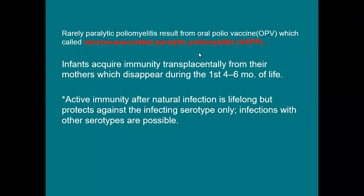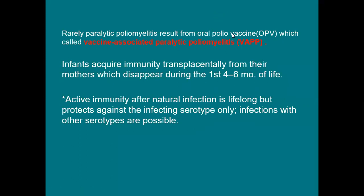Infants acquire immunity transplacentally from mothers; antibodies protect the baby for the first four to six months of life. Active immunity after natural infection is lifelong, but protects only against the infecting serotype. If there is infection by another serotype, the individual is not protected.